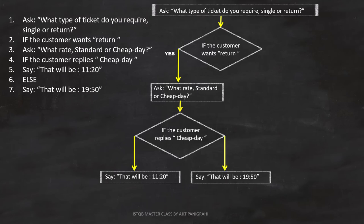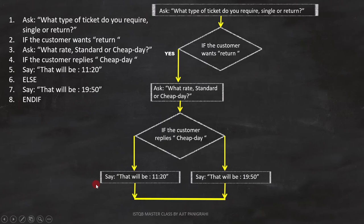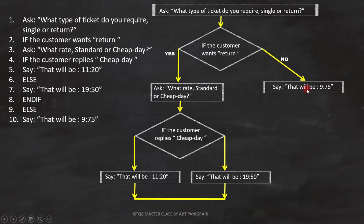Since line seven is a statement, we can represent it like this on the flowchart. Line number eight is end if. This end if is also for the immediate if condition — that means it is for condition on line number four, and this is how we close this condition on the flowchart. Line number nine is else. Since the condition on line four is already closed, this else is for condition on line number two. If this condition fails, line number ten will be executed, and this is how we represent it in the flowchart. Line number ten is end if, and this end if is for the condition on line number two, and this is how we close it in the flowchart.